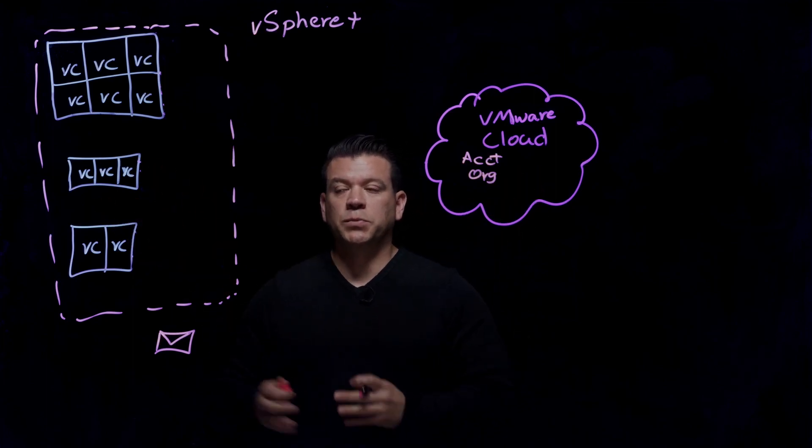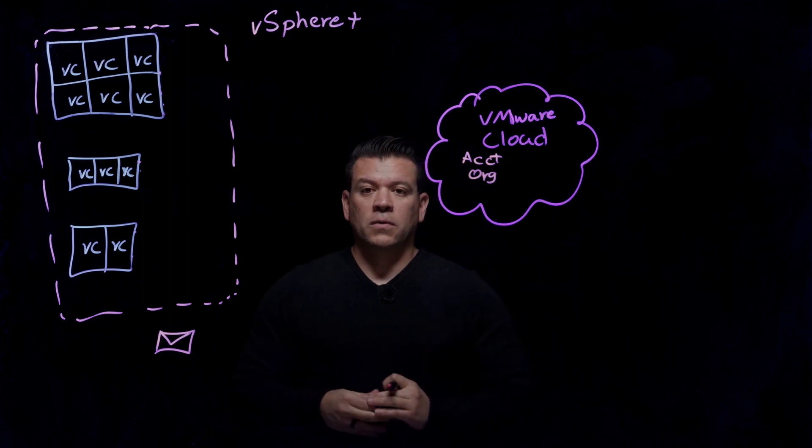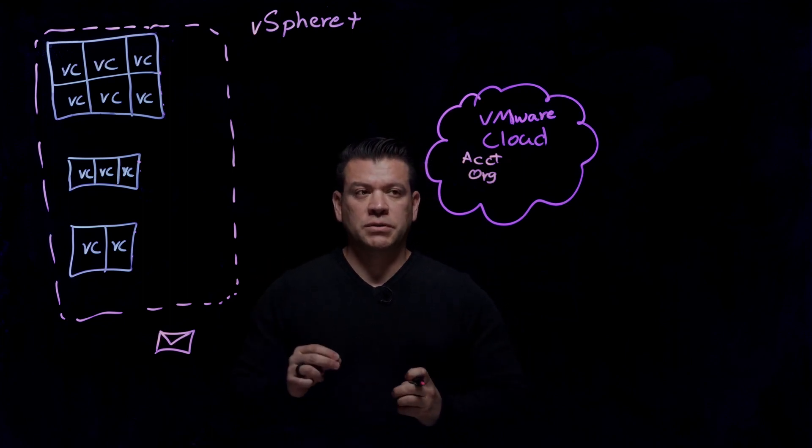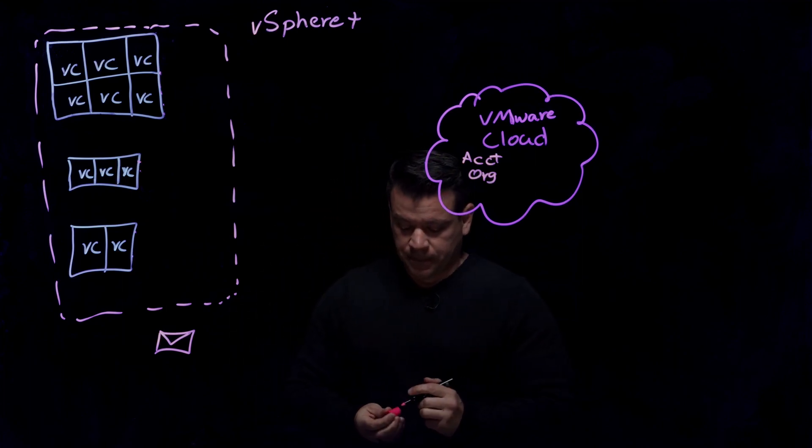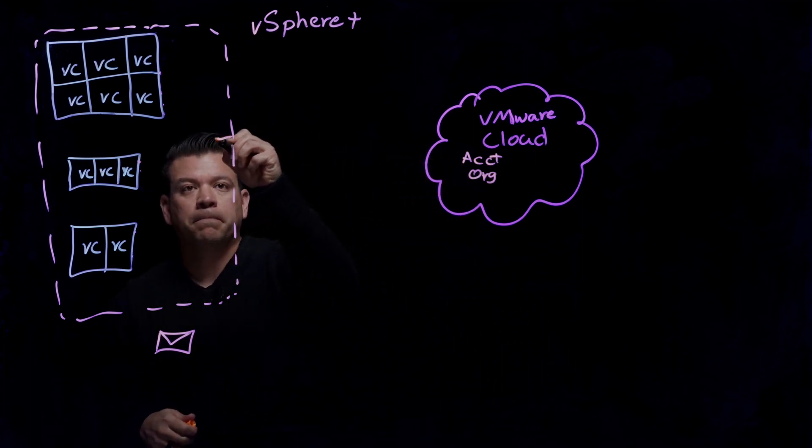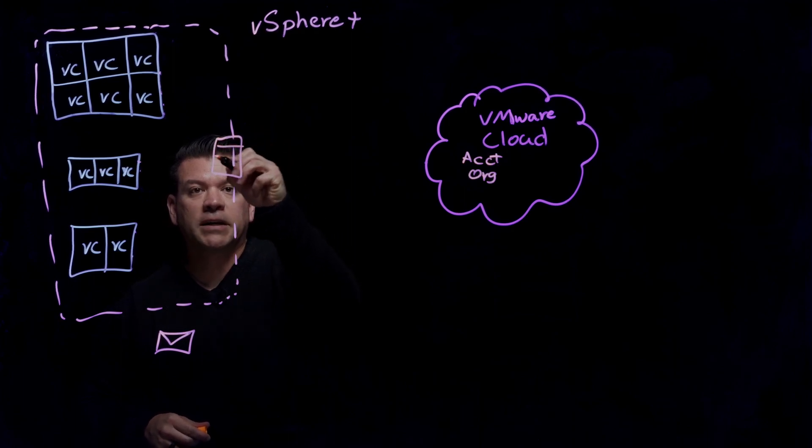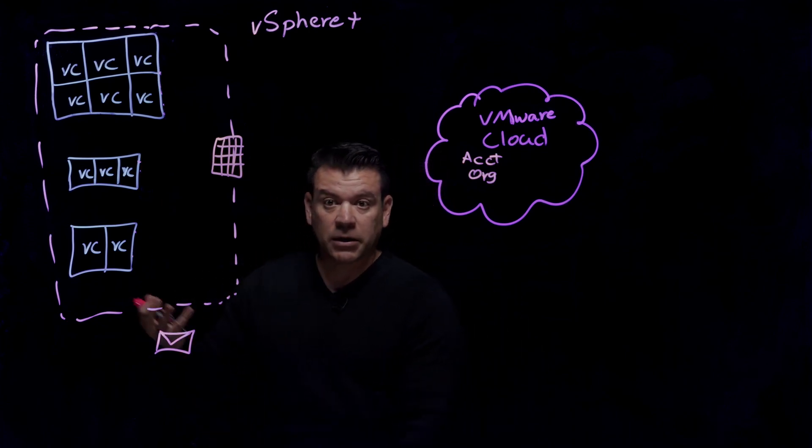We need to connect the two sides. We need to connect the on-prem side to the cloud side. But we know, if you're security conscious, that we don't want to expose our internal environment to the outside. So what do we do? Well, most organizations are secure, especially nowadays. So we have a firewall or several firewalls and layers of security.